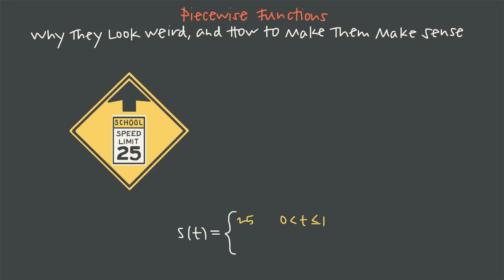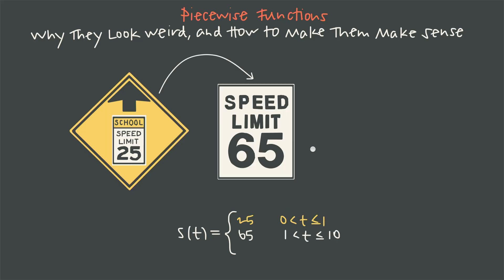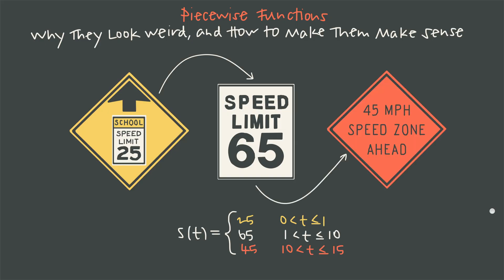You know how speed limits change depending on where you are? Imagine that your house is inside of a school zone where the speed limit is 25 miles an hour. When you leave your house, you're going to be traveling 25 miles an hour, maybe for the first mile. So we might say that your speed, S, is 25 miles an hour when time T is between 0 and 1 miles. Maybe then you get on the highway and your speed jumps to 65 miles an hour, traveling at 65 between that first mile and the 10th mile. Then at the 10th mile, you enter a construction zone where you're forced to slow down to 45 miles an hour from the 10th to the 15th mile. We can model your speed with a piecewise function.